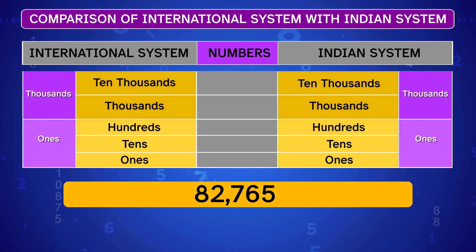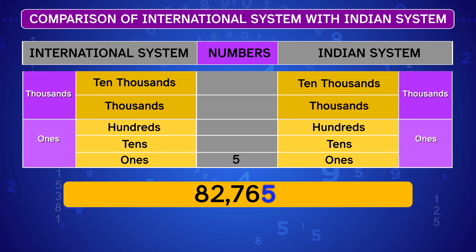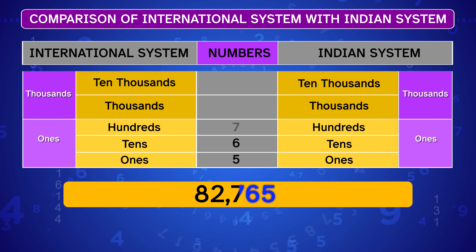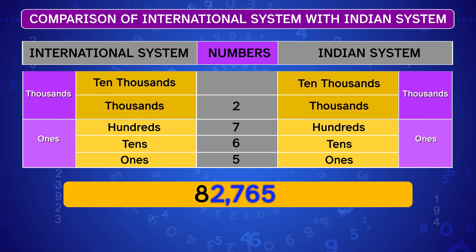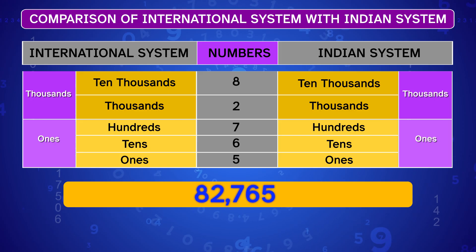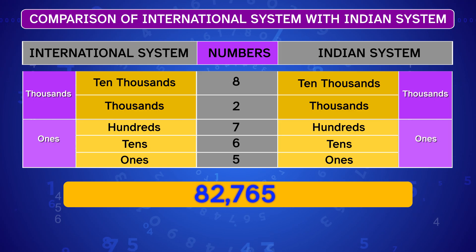Next example: 82,765. The five is in the ones place, the six is in the tens place, the seven is in the hundreds place, the two is in the thousands place, and the eight is in the ten thousands place. In both systems, we read it as eighty-two thousand seven hundred and sixty-five.